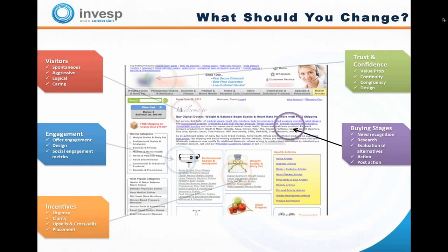Another area to evaluate is buying stages. Most e-commerce websites, including this one, are designed for people in the action stage — people ready to buy with their credit card in hand. But most visitors are early in the buying funnel: some are in the need recognition phase, some are researching, some are evaluating alternatives. Only about 20% of your visitors are in the action stage, yet most e-commerce websites are designed only for those 20%. Nothing on this site addresses early-stage visitors — it's tricky because you don't want to educate them and have them convert on a competing website.